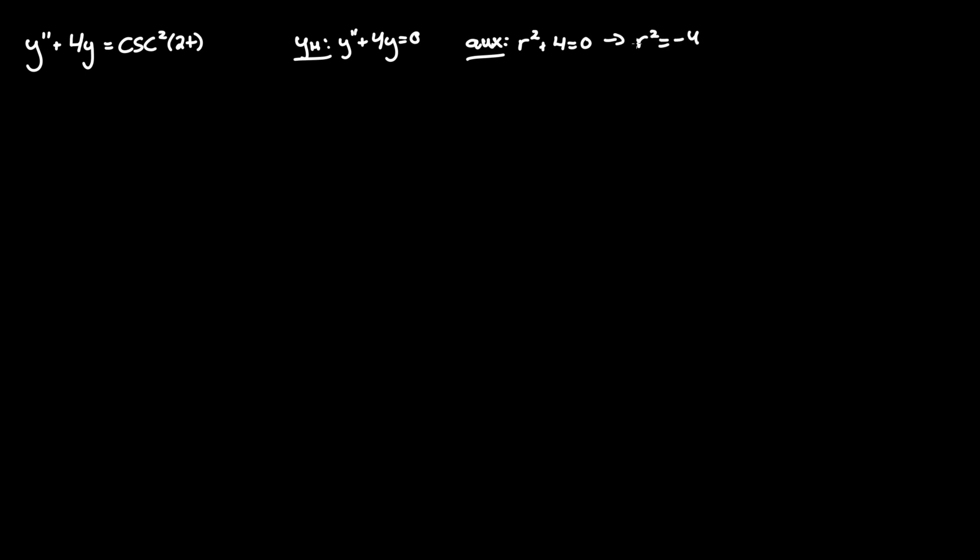So r squared equals negative 4, and you take the square root of both sides which will give us our two root solution of r equals 0 plus or minus 2i, where alpha equals 0 and beta equals 2.